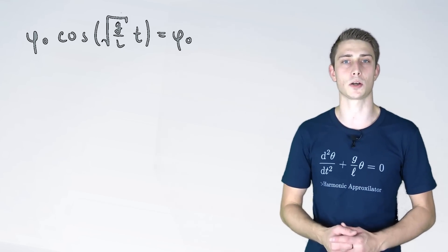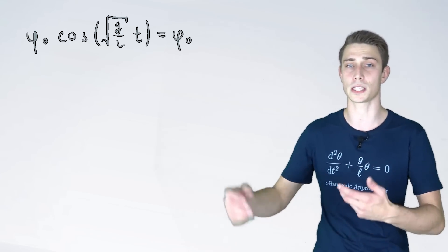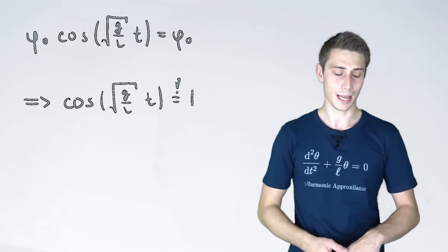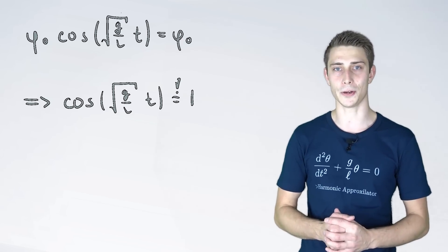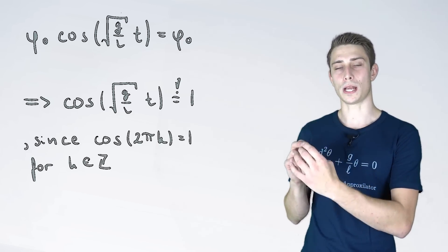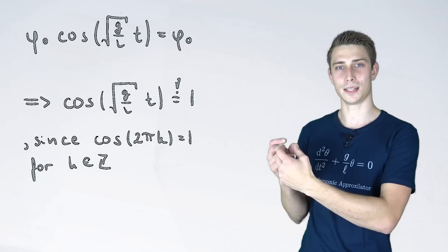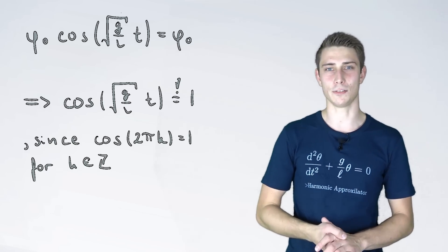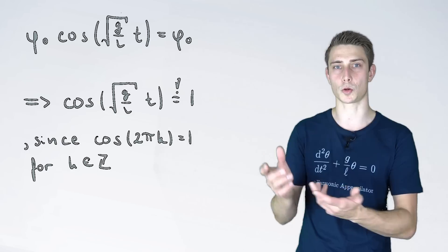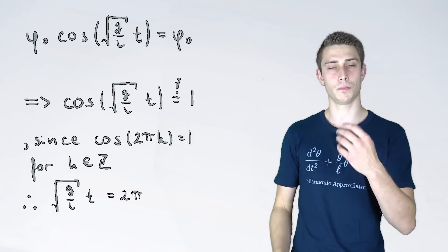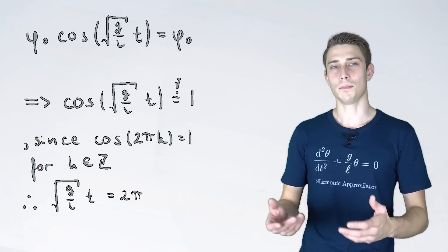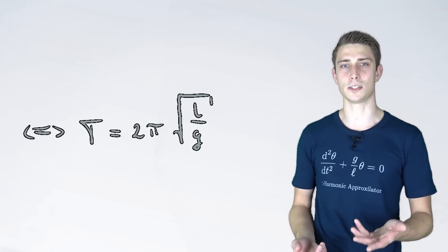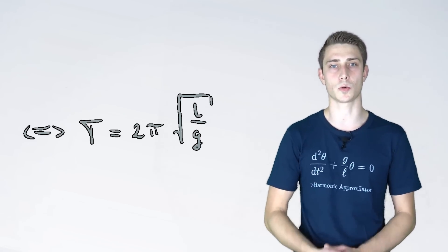Phi naught is thus equal to phi naught times the cosine term. Under the condition that phi naught is not equal to zero we can divide by it. Meaning we are going to get that the cosine term has to be equal to one. Luckily enough our cosine is two pi periodic. Meaning always when our argument of the cosine is equal to two times pi times k where k is out of the positive or negative integers we are going to arrive at the point one. This is what we want. Now we are going to set our argument of the cosine equal to two pi. Meaning we can solve for our time it takes, the so-called period time, capital T, and this is going to result in two times pi times the square root of L over G.